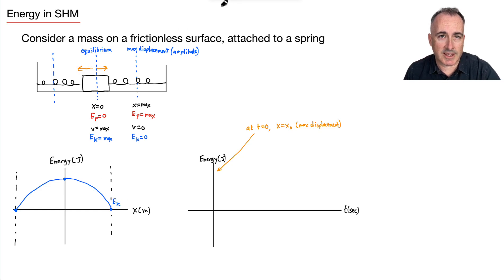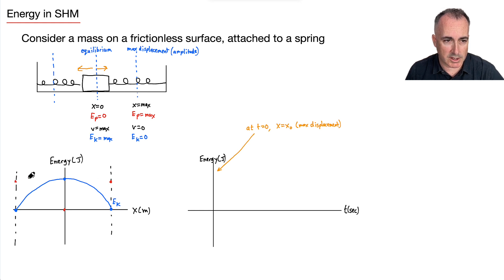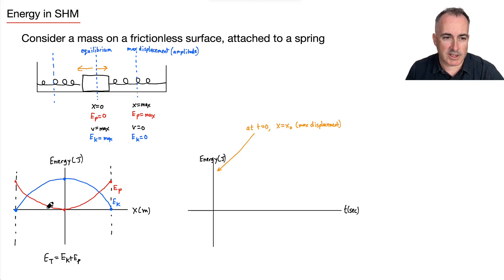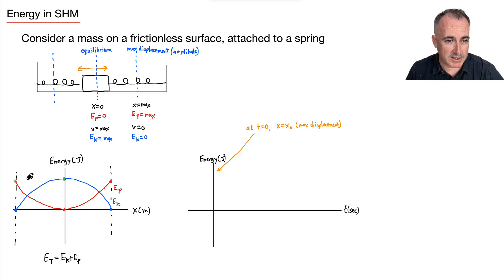For potential energy: when x = 0, EP is zero, and at maximum displacement EP is at a maximum on both sides — it's symmetric. So I draw a curve that is essentially the inverse shape, which I label EP. We also have the equation total energy ET = EK + EP. At x = 0: zero plus maximum EP gives a constant value. At maximum displacement: maximum EP plus zero gives the same constant. So ET is a flat horizontal line at a constant value across all displacements.